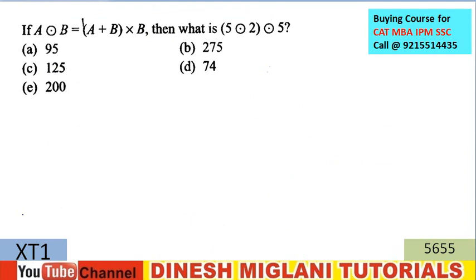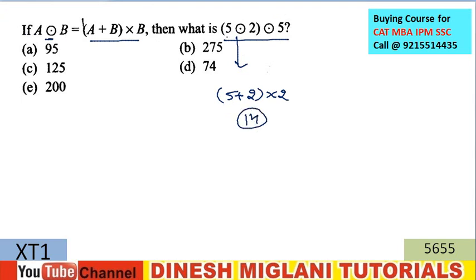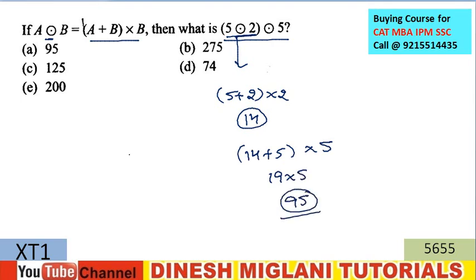Next is a very basic question on functions. A·B is defined as (A+B)·B. First solve 5·2: that's (5+2)×2 = 7×2 = 14. Now solve 14·5: that's (14+5)×5 = 19×5 = 95. So the answer is A — the result is 95.